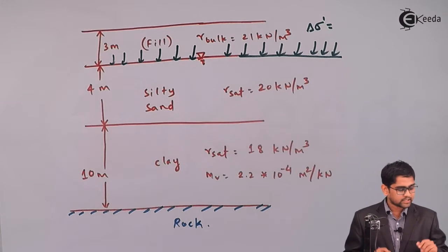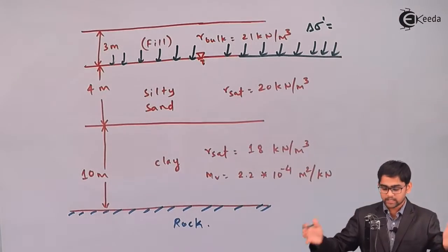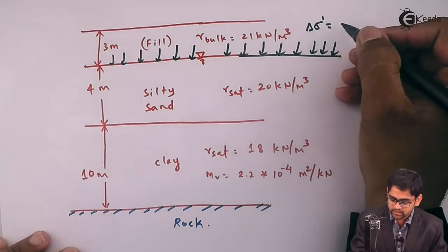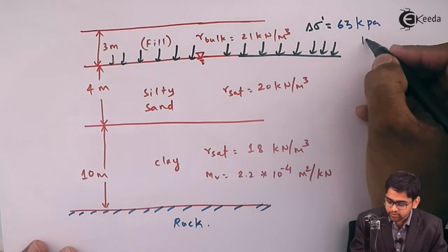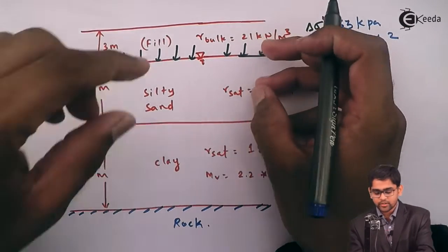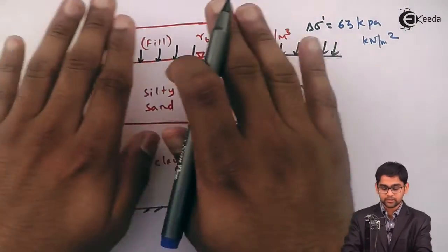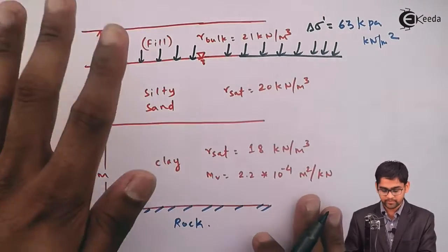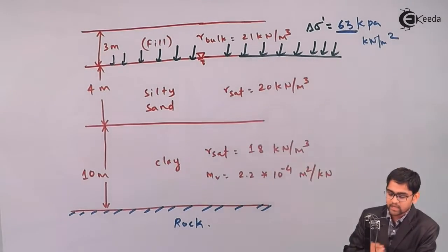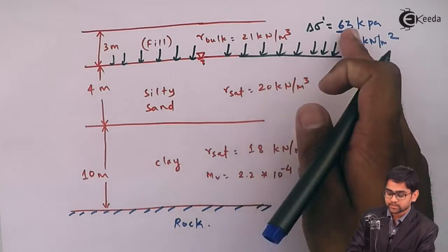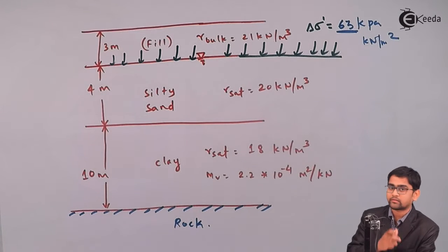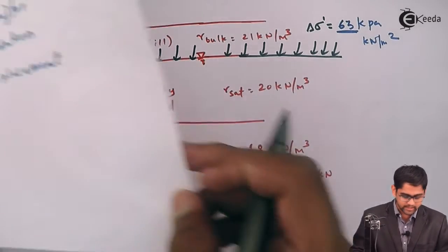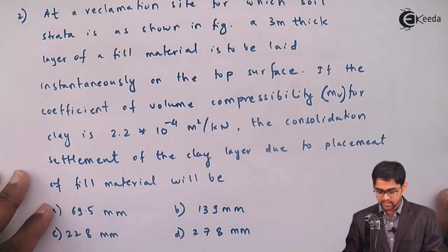Since the fill is placed over a very large area as a land reclamation project, the increase in stress because of its placement will be 21 into 3, which is 63 kPa (kilonewton per meter square). This is the additional stress imposed on the clay layer. Because of this effective stress from the fill placement, there will be a change in the volume of the clay due to the escape of pore water, leading to consolidation settlement — which is the ultimate consolidation settlement of the clay layer we need to evaluate.